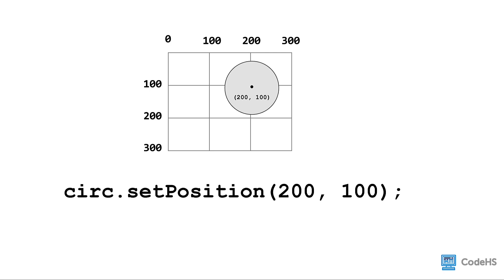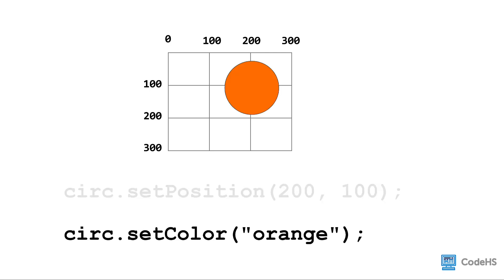In this case, the x-coordinate of the center of the circle is 200 and the y-coordinate of the center of the circle is 100. To change the color, we write the name of the variable storing the shape, dot setColor, followed by parentheses. Between the parentheses, we write a string with the name of the color. In this case, the color of the circle will be set to orange.